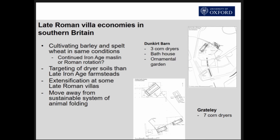To summarise what this has found about the late Roman villa economies: they're cultivating barley and spelt wheat in the same conditions, whether as a rotation or as a mixed cropping system. We see different targeting of soil types in the late Iron Age period, but really extensification, especially at Grateley Villa. Looking at the two villas in more detail, Grateley has a clear emphasis on crop production — it has seven grain-drying ovens and huge island barns — whereas Dunkirk Barn is much more of a wealthy residence with a bathhouse and ornamental garden. This suggests that the villa more oriented toward market production is pursuing more extensive farming practice.